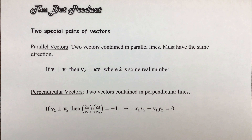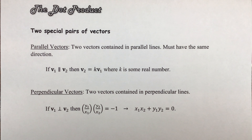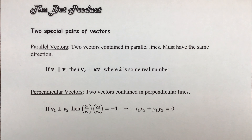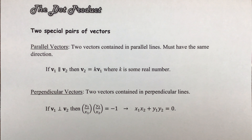The dot product. We're going to be looking at one way in which we can multiply vectors together. We actually have two different ways that we can do this. One is called the dot product, which we're talking about today, and the other one is called the cross product. I want to make sure that this is not mistaken for multiplying vectors by a scalar value — that was different. This is different: what we're going to be doing is multiplying two vectors together.